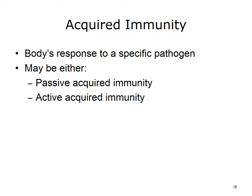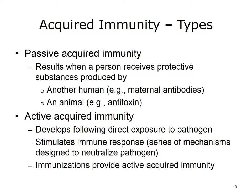Acquired immunity, on the other hand, is the body's response to a specific pathogen. There are two types of acquired immunity. Passive acquired immunity is the result of receiving protective substances produced by another human or animal, such as maternal antibodies or antitoxin. One example of passive acquired immunity would include disease resistance obtained by an infant who is fed with breast milk. In contrast, active acquired immunity develops following a direct exposure to a particular pathogen. When we receive immunizations or vaccinations against, for example, chickenpox or rubella, they are designed to provide us with a type of active acquired immunity.